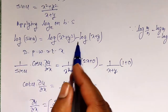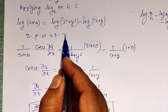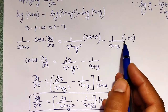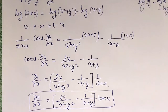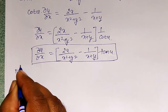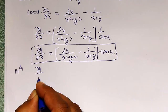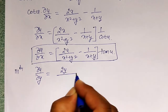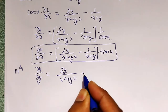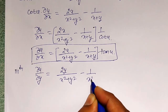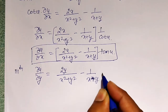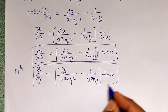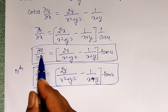Similarly, differentiating partially with respect to y: the same steps apply, but instead of 2x I get 2y, and the x + y term remains the same. Therefore: ∂u/∂y = [2y/(x² + y²) − 1/(x + y)] · tan(u).